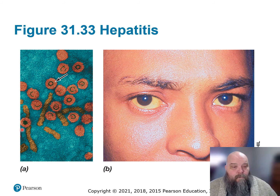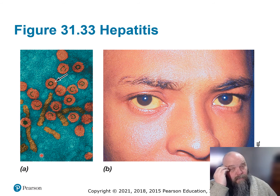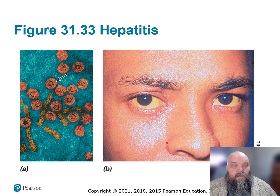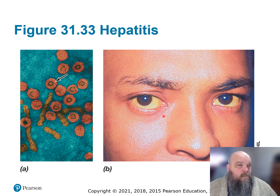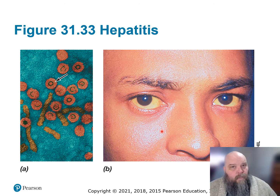What you see with hepatitis is jaundice. The liver is no longer able to detoxify or filter things from the blood, so you get a buildup of waste products. One of those is bilirubin. Bilirubin gets into the blood, collects in the tissues, and causes the sclera of the eyes to go from white to yellow — that's jaundiced eyes. If you have jaundice, something is going wrong with your liver function.